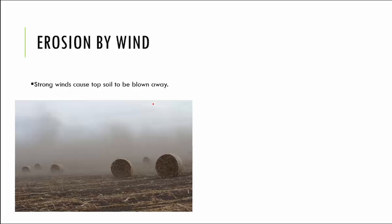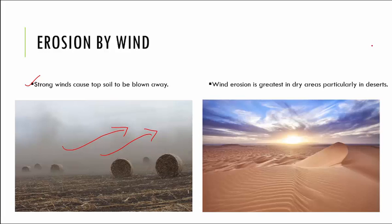The second cause is erosion by wind. Strong winds cause topsoil to be blown away, especially in areas where there is less vegetation to bind the soil. This soil is carried and deposited at a place where there is less wind speed. Soil erosion because of wind is greatest in dry areas, especially deserts, because there is nothing growing there to hold onto the soil, so it is freely moved around.